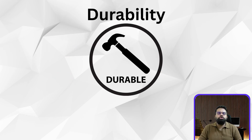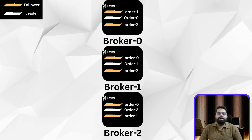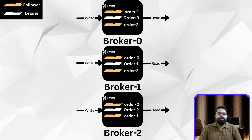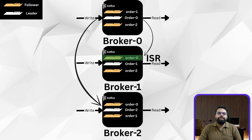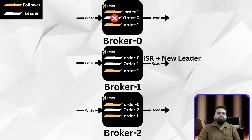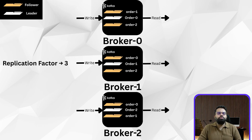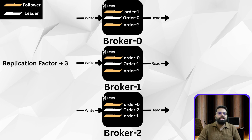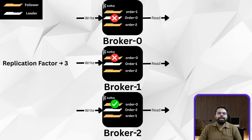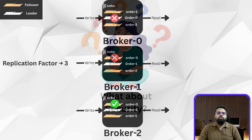Now let's talk about durability. Kafka ensures high availability using replication. Every partition has one leader and one or more followers. The leader handles all reads and writes; followers replicate from the leader in real time. Followers that are caught up are called in-sync replicas, or ISR. Only ISR members can become the new leader if the current one fails. If a leader crashes, Kafka promotes a follower from the ISR list — no data loss, just a fast switch. Most production clusters use a replication factor of 3, meaning even if two brokers crash, your data is still safe. Kafka also supports unclean leader election, letting an out-of-sync replica become leader, but this is dangerous and usually disabled.